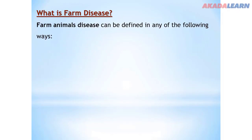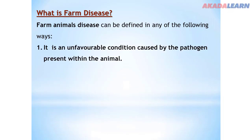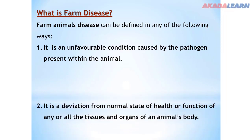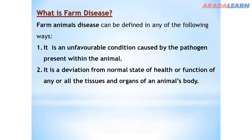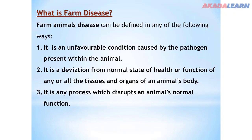What is farm animal disease? Farm animal disease can be defined in any of the following ways. Number one, it is an unfavorable condition caused by a pathogen present within the animal. Number two, it is a deviation from the normal state of health or function of any or all the tissues and organs of an animal's body. Number three, it is any process which disrupts an animal's normal function.